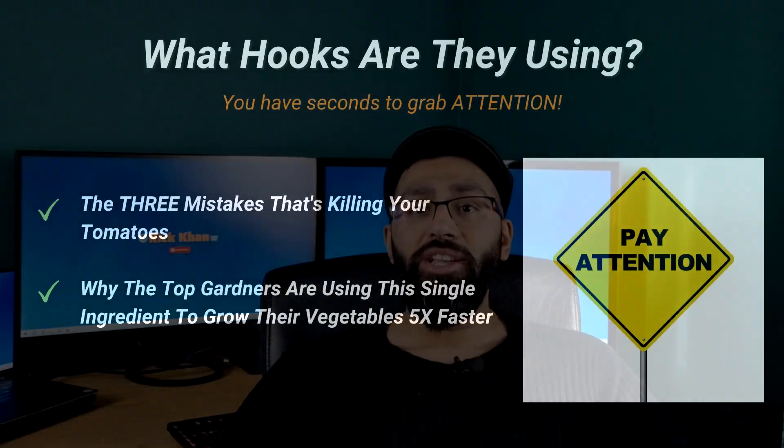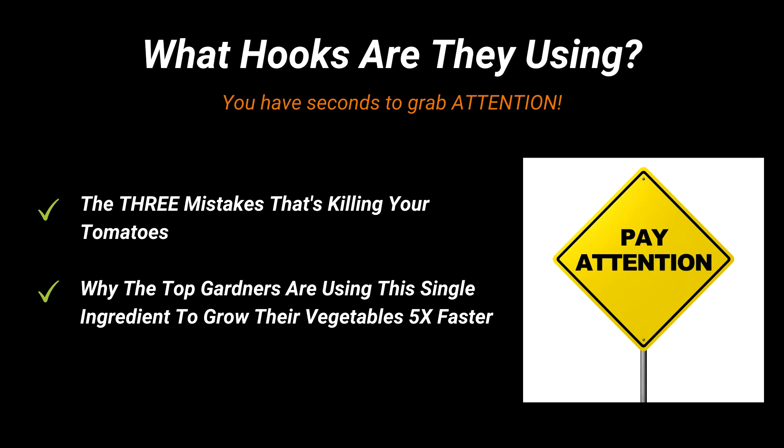On the Facebook ad, look at what hooks they're using to grab attention from your audience — this will give you an idea of what your competitors are doing. For example: 'The three mistakes that's killing your tomatoes,' or 'Why the top gardeners are using this single ingredient to grow their vegetables five times faster.' This will give you the inspiration to come up with a hook that you know people haven't seen before and what attracts them.